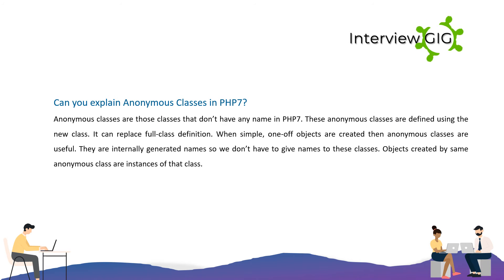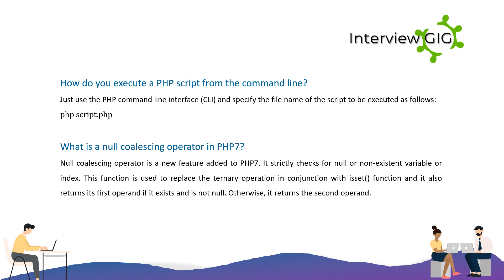Can you explain anonymous classes in PHP 7? Anonymous classes are those classes that don't have any name in PHP 7. These anonymous classes are defined using the 'new class' syntax. They can replace full class definitions. When simple, one-off objects need to be created, anonymous classes are useful. They are internally generated names, so we don't have to give names to these classes. Objects created by the same anonymous class are instances of that class.